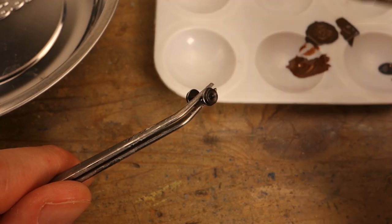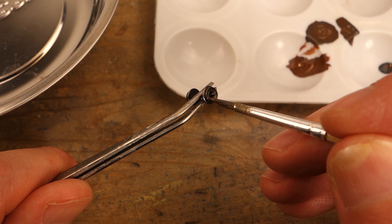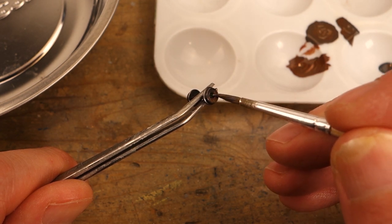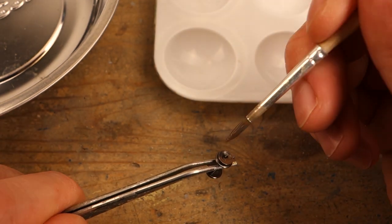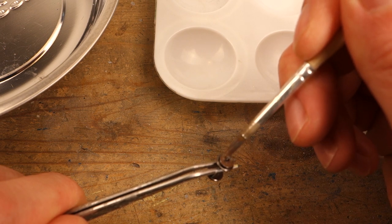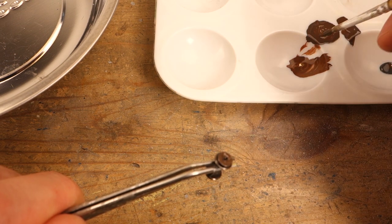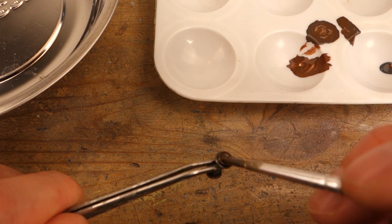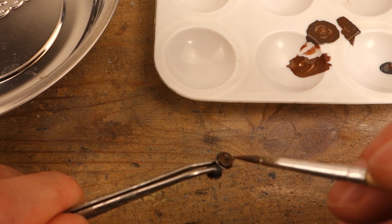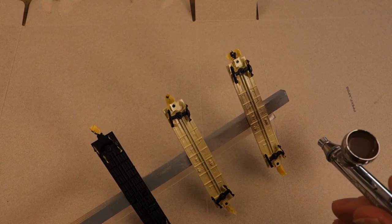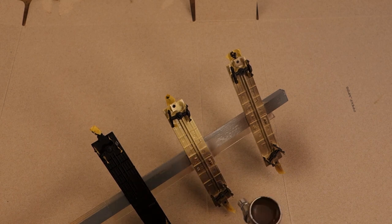I mixed Tamiya XF68 NATO Brown and XF24 Dark Grey and brush painted the wheel faces with the mix. Then I prepared a larger batch of the same mix and airbrushed the under frame and trucks.